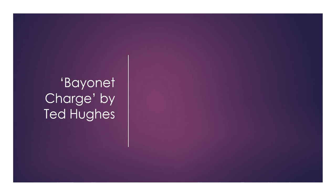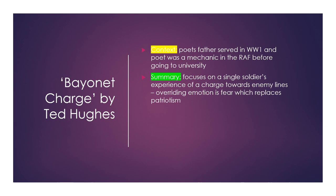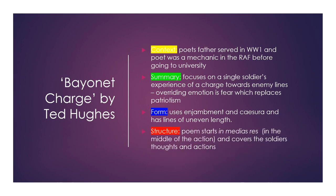Bayonet Charge by Ted Hughes. The poet's father served in World War I and the poet was a mechanic in the RAF before going to university. The poem focuses on a single soldier's experience of a charge towards enemy lines, and the overriding emotion is fear, which replaces patriotism. The form uses enjambment and caesura and has lines of uneven length. The poem starts in medias res, in the middle of the action, and covers the soldier's thoughts and actions.